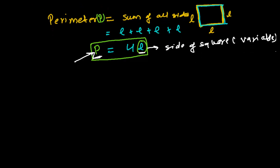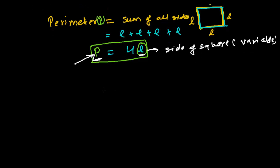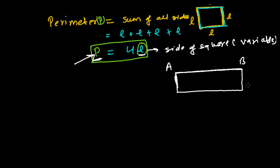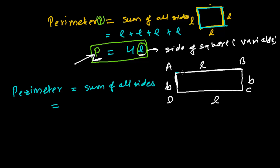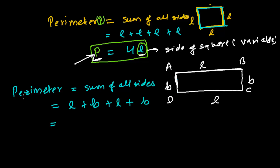Let me give you another example involving length and breadth — a rectangle. I'm going to take a rectangle and label it A, B, C, D. A to B is the length, B to C is the breadth, C to D is again the length, and D to A is again the breadth. I'm representing length by L and breadth by B. The perimeter of this rectangle is the sum of all sides, so we add AB, then BC, then CD, then DA.